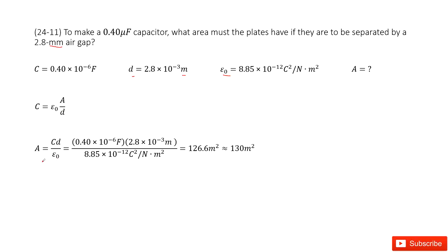And then we can write down the function for A. You can see Cd over epsilon naught. Input the known quantities, and get the answer there.